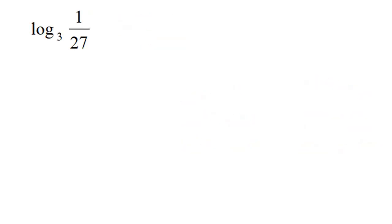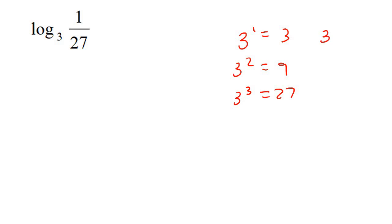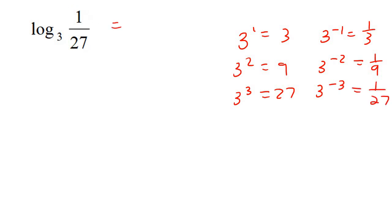Here's our last example. We know 3 to the 1 is 3, 3 to the 2 is 9, 3 to the 3 is 27; 3 to the minus 1 is 1 over 3, 3 to the minus 2 is 1 over 9, and 3 to the minus 3 is 1 over 27 — so this answer is negative 3.